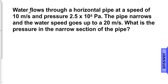In this problem, water flows through a horizontal pipe at the speed of 10 meters per second and a pressure of 2.5 times 10 to the 5th pascals. The pipe then narrows and the water speed goes up to 20 meters per second. The question asks: what is the pressure in the narrow section of the pipe?